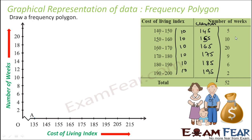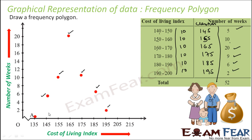Now we plot these points. The variable is on the x-axis and the values (frequencies) are on the y-axis — the maximum was 20. We plot: (145, 5), (155, 10), (165, 20), (175, 9), (185, 6), (195, 2). We also add two extra points: (135, 0) for the preceding class, and (205, 0) for the succeeding class — since the next class would be 200–210. So we plot these two extra points as well.